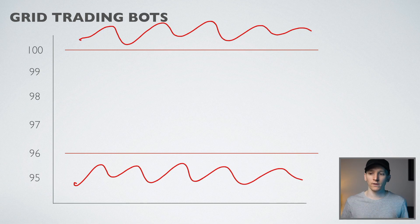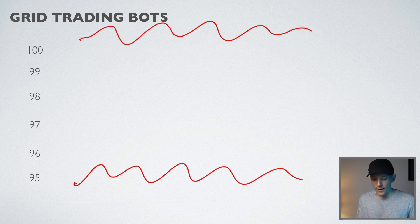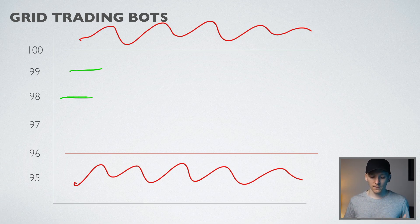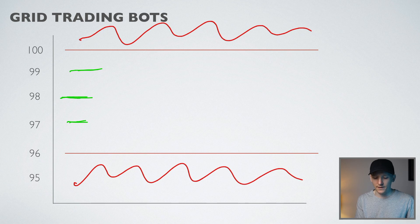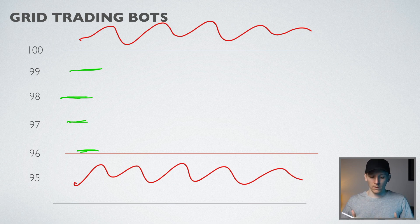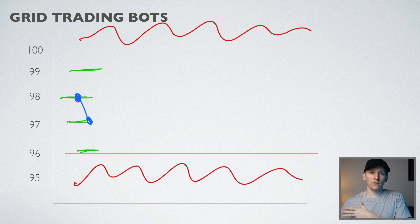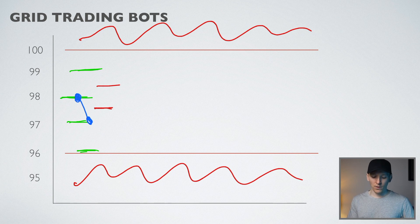Inside the bot, you have what are known as grids. A grid is simply a buy order and a sell order — buy low and sell high. You tell the bot to buy at 98 and sell at 99, and that's one grid. Since you can't predict the price, the bot places bids at different price levels: 96, 97, 98, 99. As the price moves, it refreshes these bids. If it gets hit at 98, the price moves down to 97 and you've bought another. Then when the price moves up to 97.5, it sells what it bought at 97 — that's a small profit, and that's one grid.